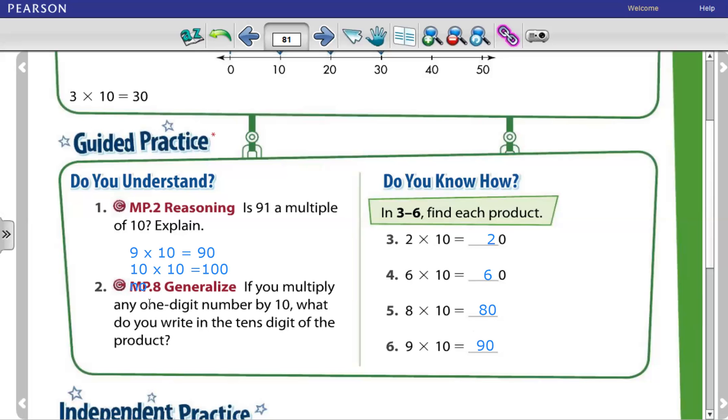So if you multiply any one digit number, any one digit like number 1, number 2, number 3, one digit, number 4, number 5, number 6, number 7, 8, and 9, if you multiply any digit by 10, what do you write in the tens digit of the product? In the tens digit, you write the number that you multiplied by 10. For example, if I choose one digit number, for example, 5 times 10.